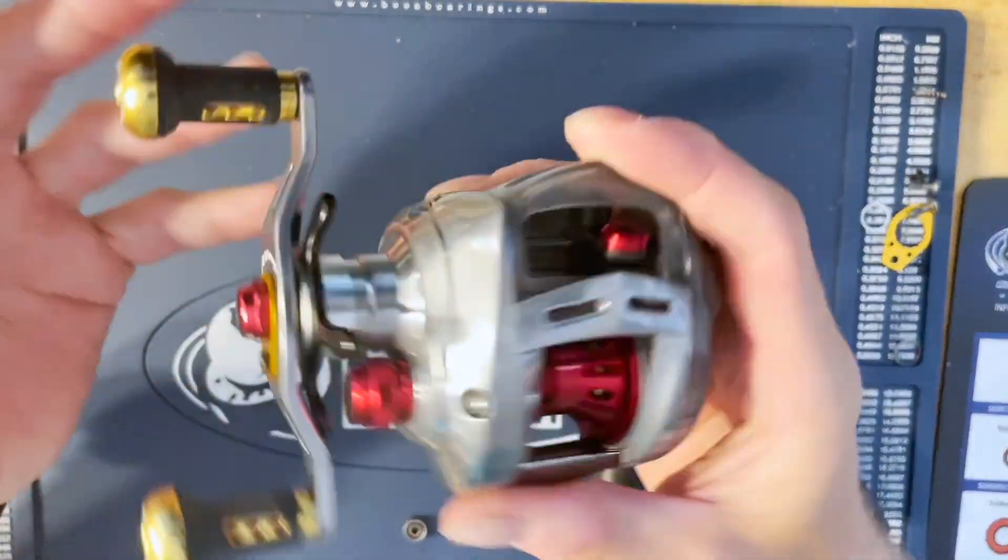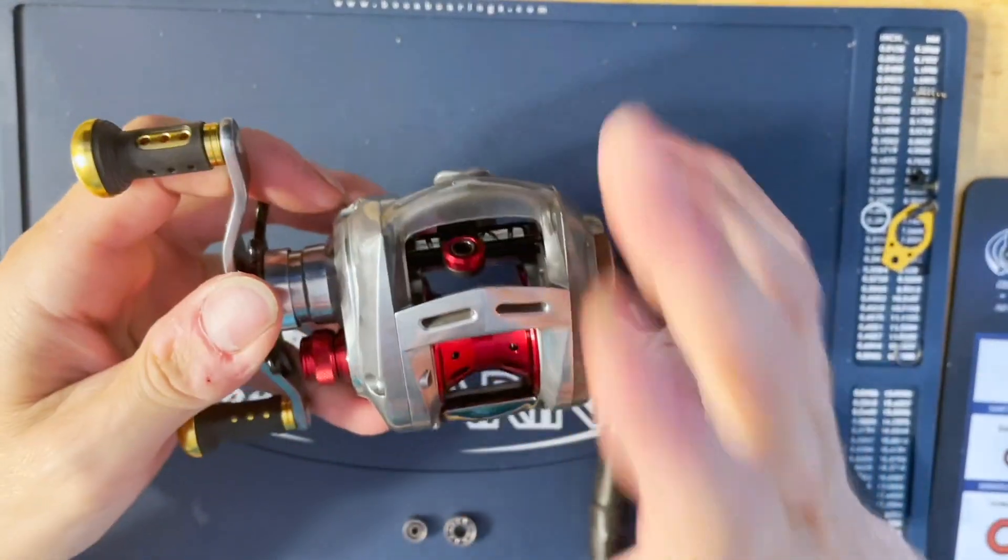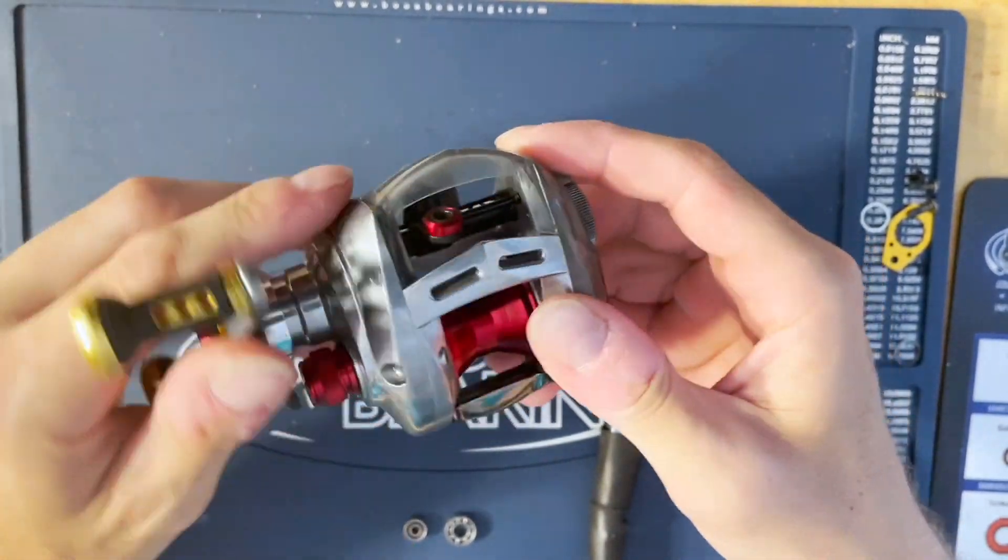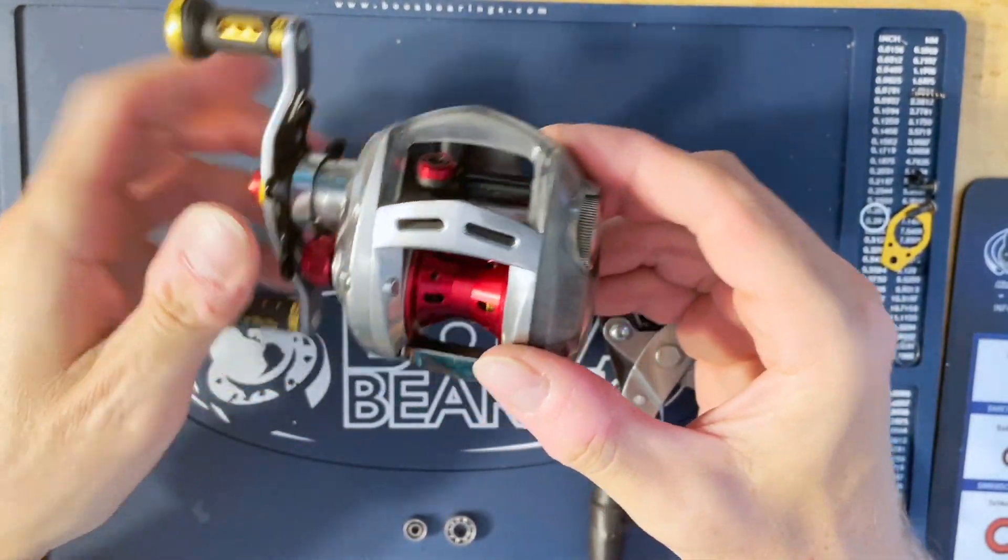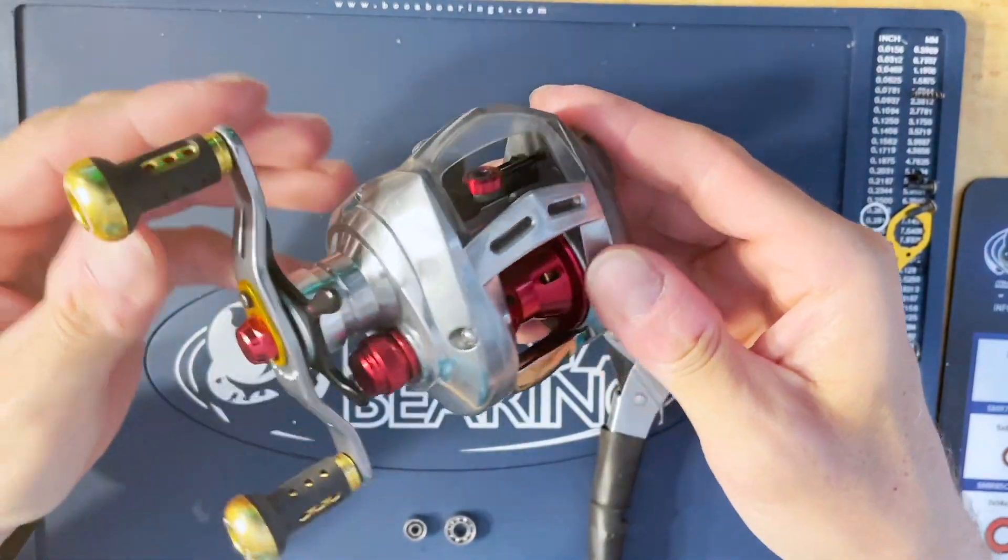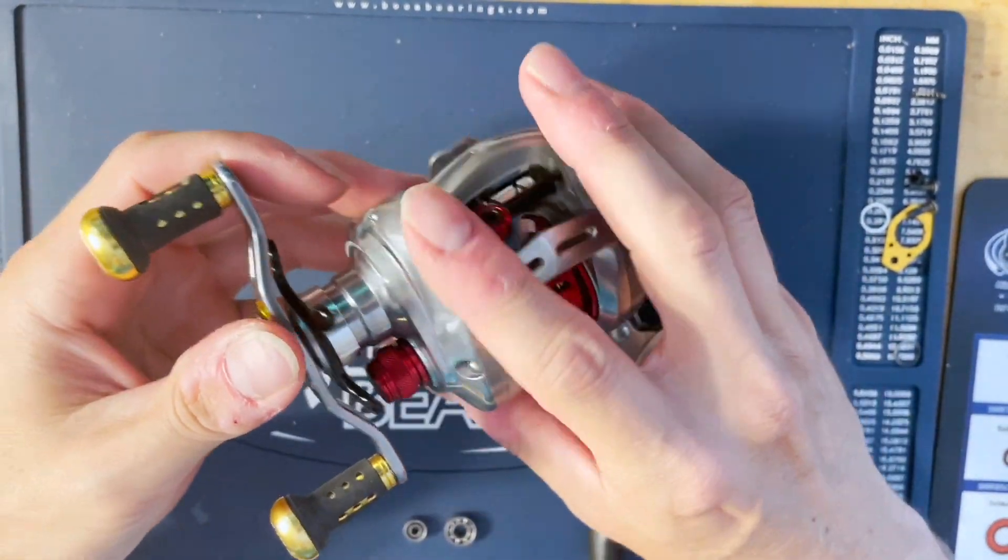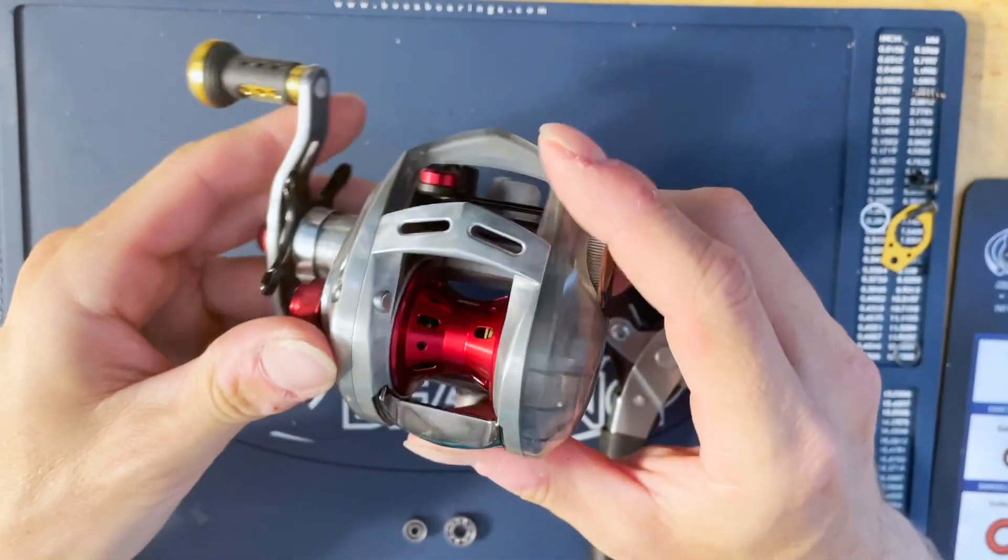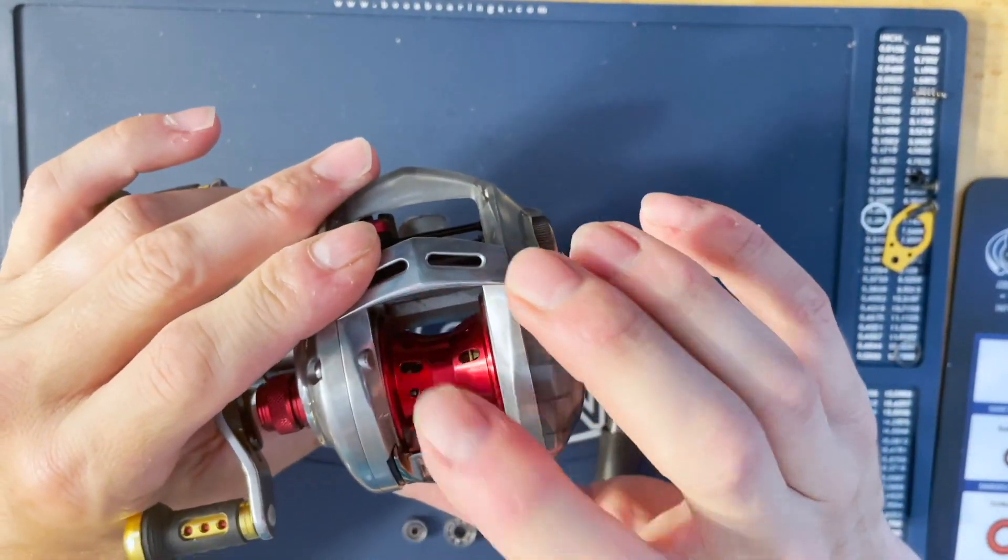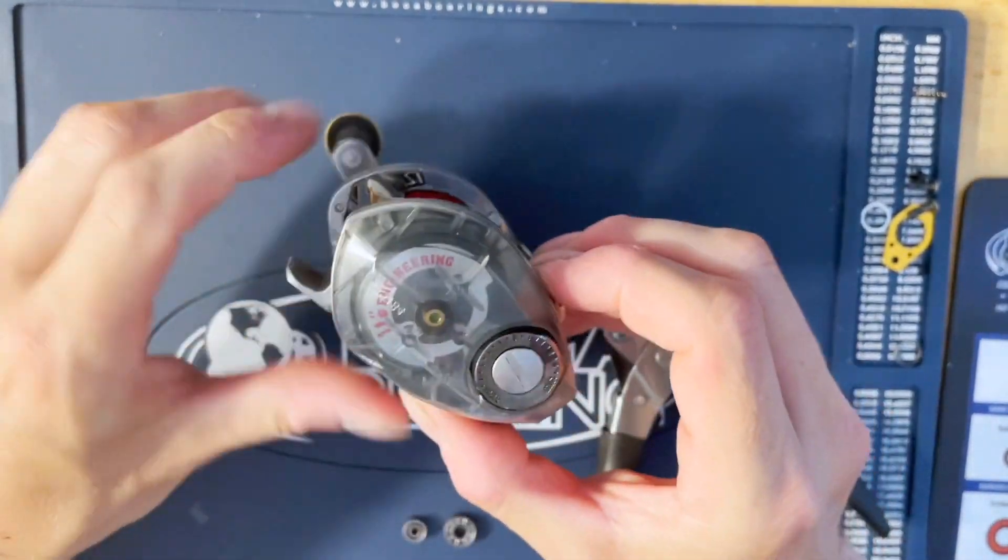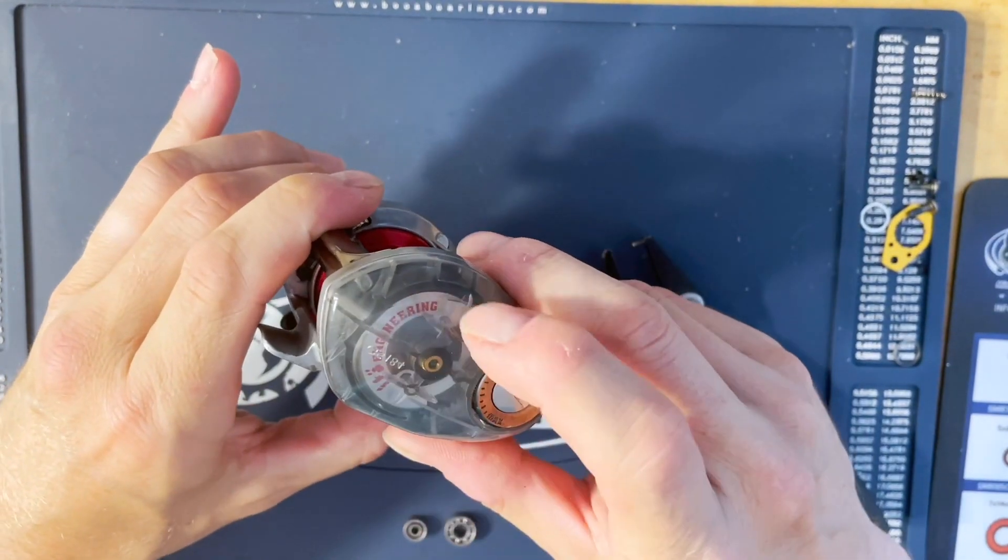What's going on everyone, back in the shop doing a bearing install on one of my custom reels. This is a Daiwa Elphys Ito, an older Megabass variant that I've tricked out. It's got an IZE spool, clear side plate, and you can see Ito Engineering on here.